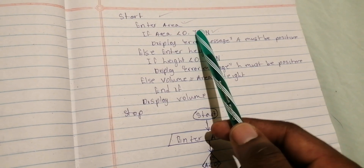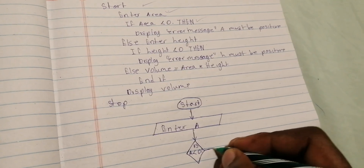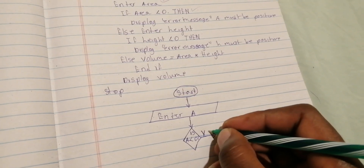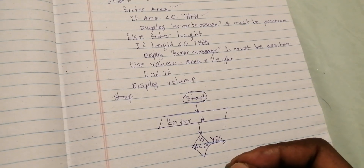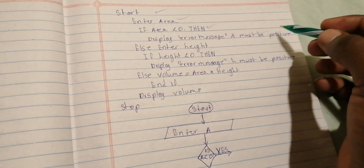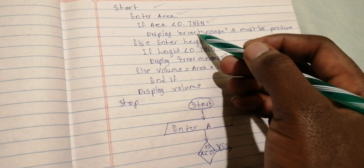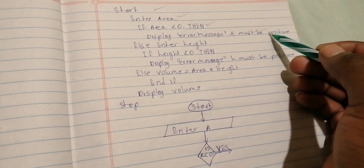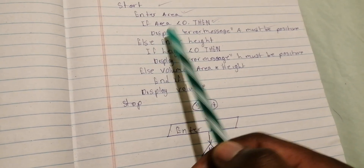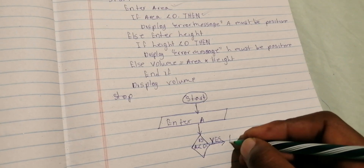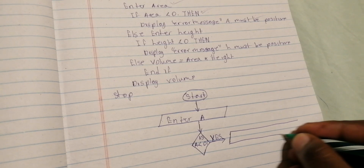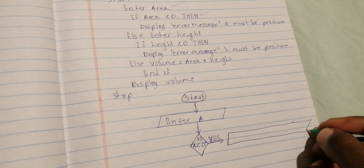Whenever you see 'Then', you draw an arrow from the diamond and on top of that arrow you write 'Yes'. We are done with that step. The next step says 'Display error message: A must be positive'. Since it's a display, it's associated with a parallelogram, so you draw a parallelogram.